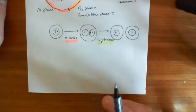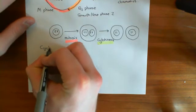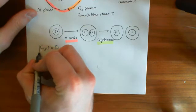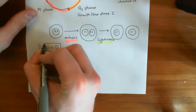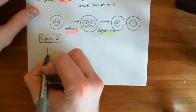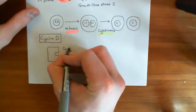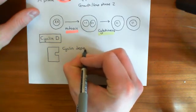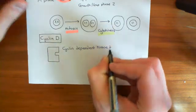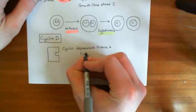Basically, what happens in cells which are going to copy their DNA is that a protein known as cyclin D goes up. So if cyclin D goes up in your cell, it goes and activates another protein known as cyclin-dependent kinase 4, often abbreviated as CDK4. CDK4 is really important in controlling the checkpoint for the transition from G1 to S phase.